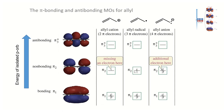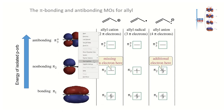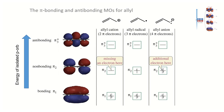In the allylic system we have three pi orbitals giving a bonding ψ1, a non-bonding ψ2, and an anti-bonding ψ3*. For the allylic anion, bond order = (2 − 0) / 2 = 1. The non-bonding ψ2 orbital is represented separately — it is non-bonding.